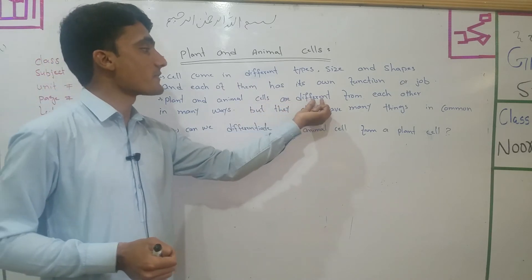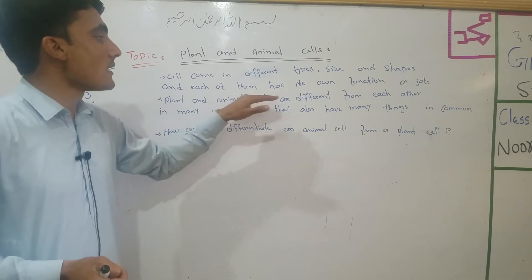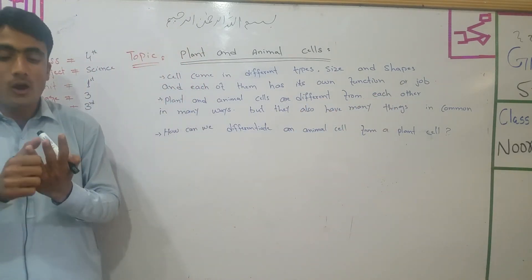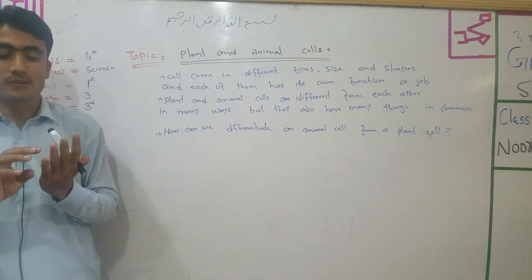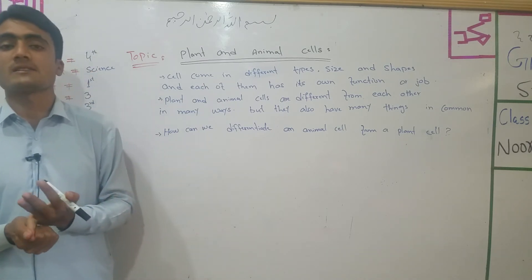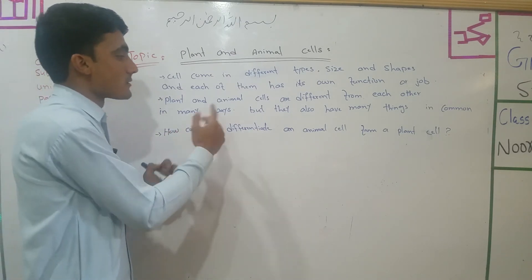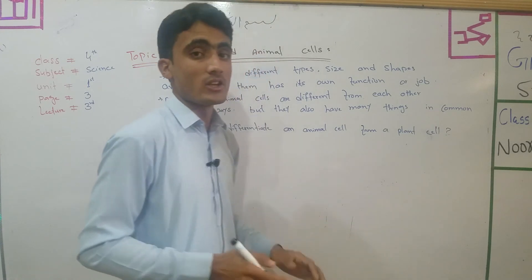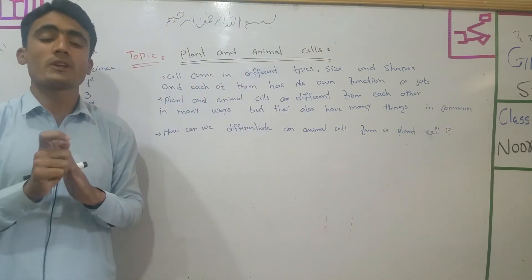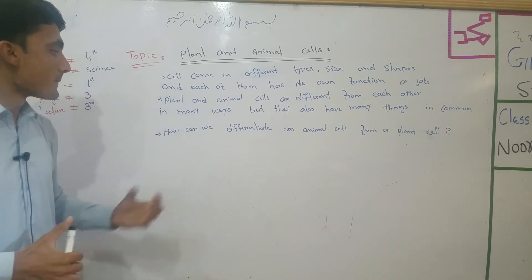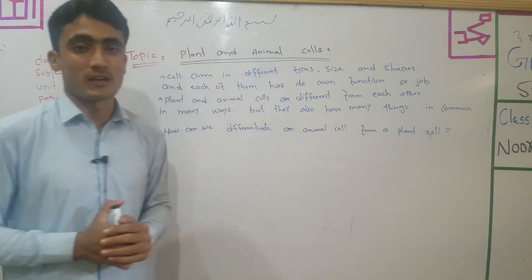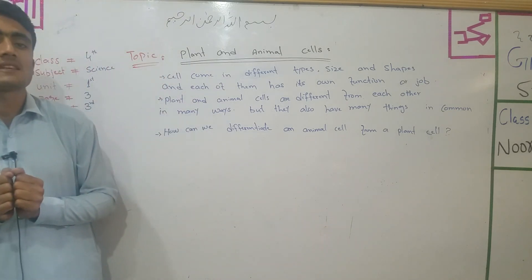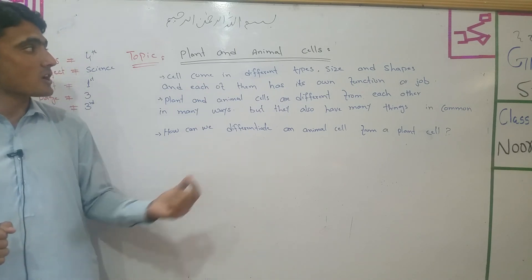Plant and animal cells are different from each other in many ways, but they also have many things in common. How can we differentiate an animal cell from a plant cell? The next topic is the animal cells.